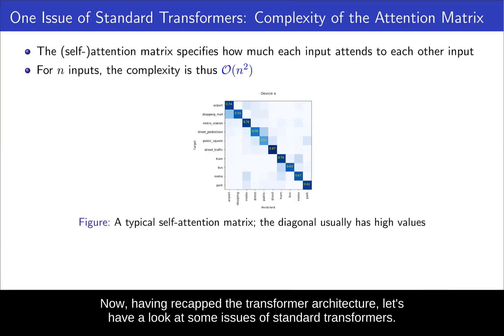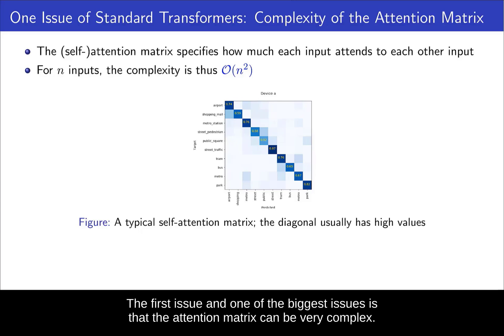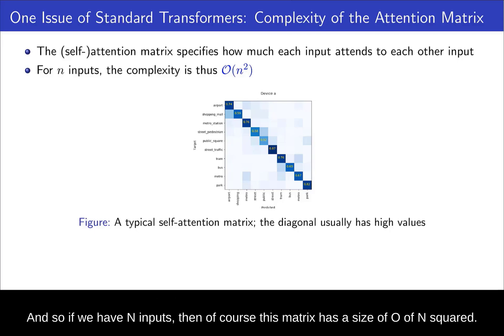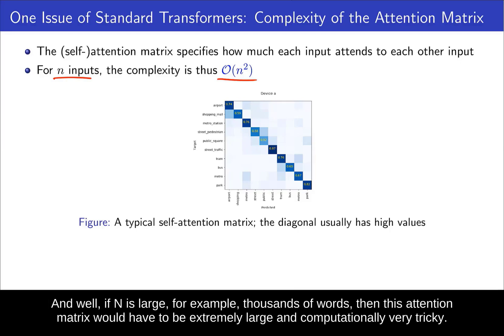Now having recapped the transformer architecture, let's have a look at some issues of standard transformers. The first issue, and one of the biggest issues, is that the attention matrix can be very complex. This self-attention matrix specifies how much each input should attend to each other input. And so if we have n inputs, then of course this matrix has a size of O(n²). And if n is large, for example, thousands of words,